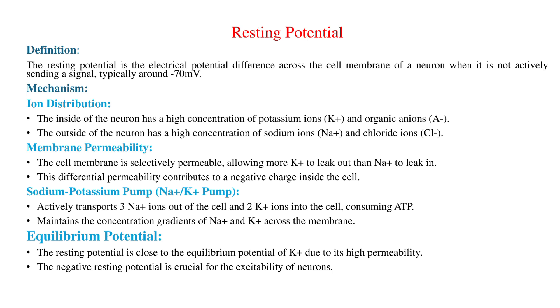Ion Distribution: The inside of the neuron has a high concentration of potassium ions (K⁺) and organic anions (A⁻). The outside of the neuron has a high concentration of sodium ions (Na⁺) and chloride ions (Cl⁻). Membrane Permeability: